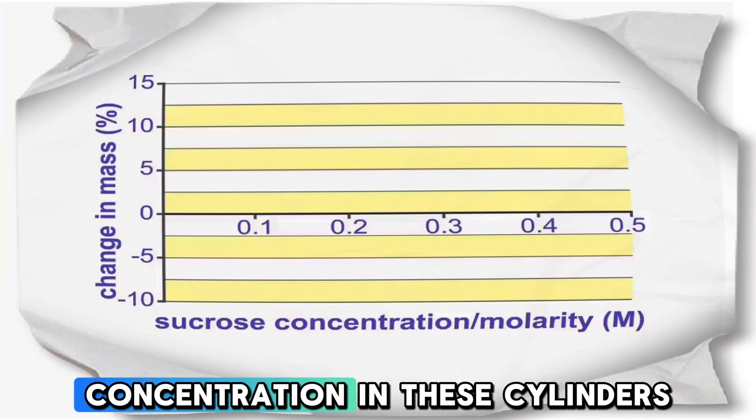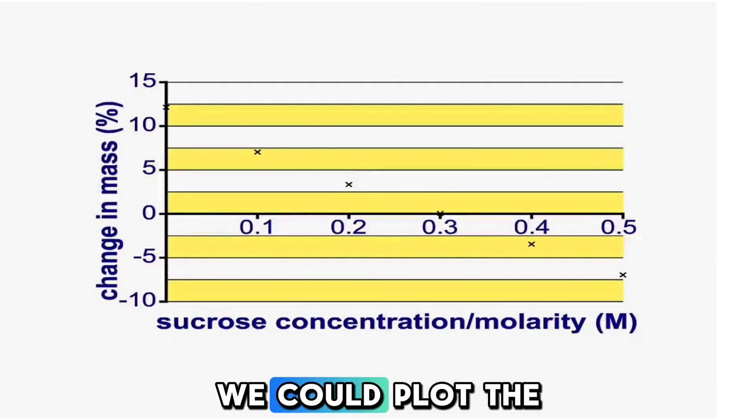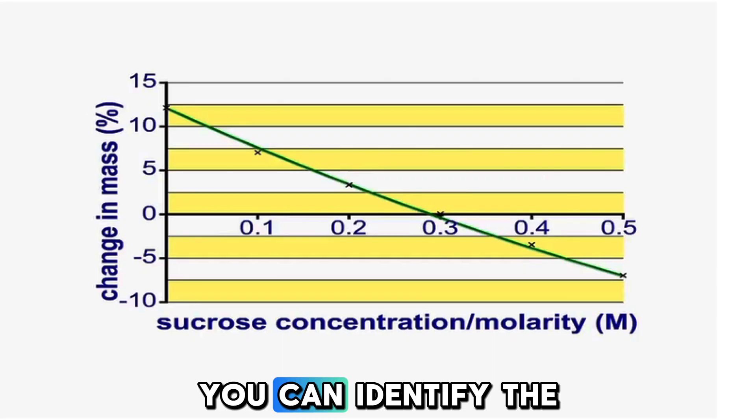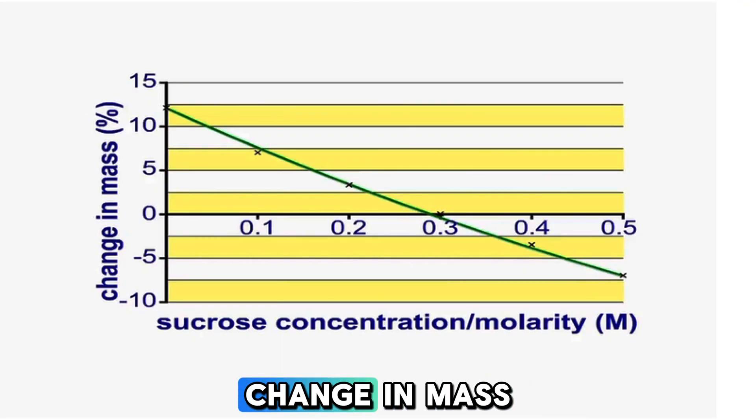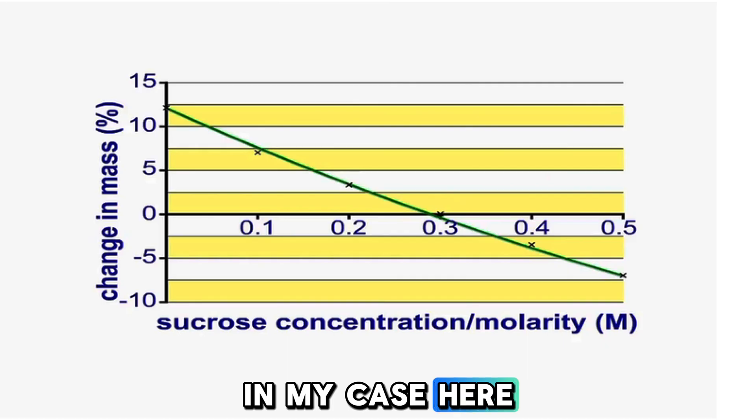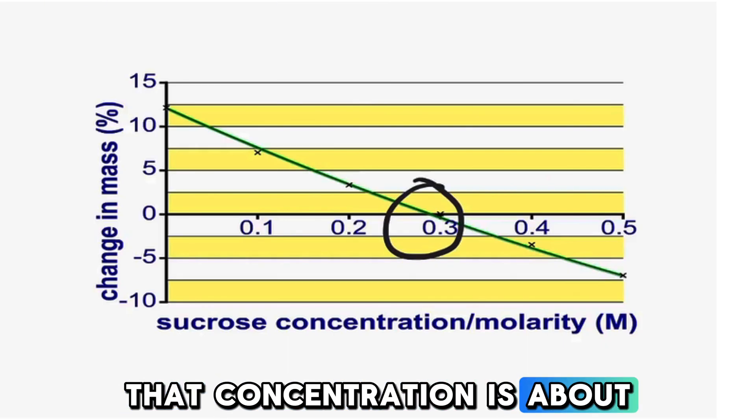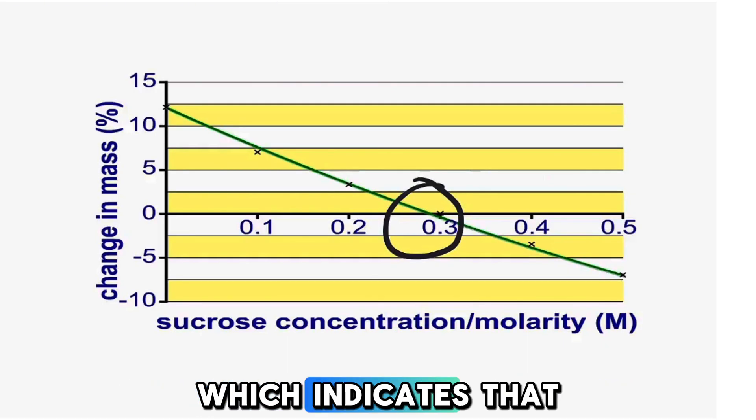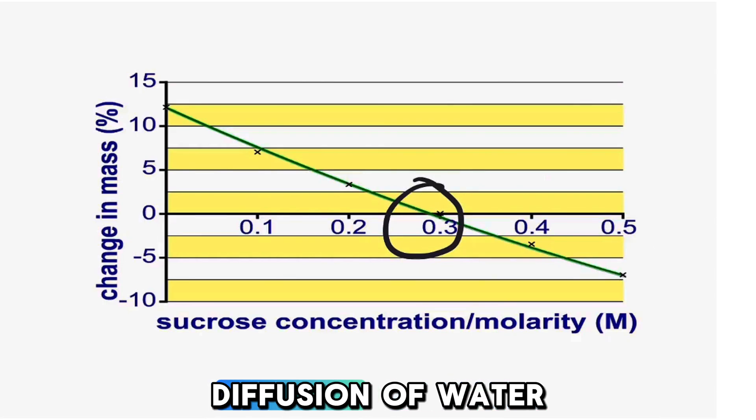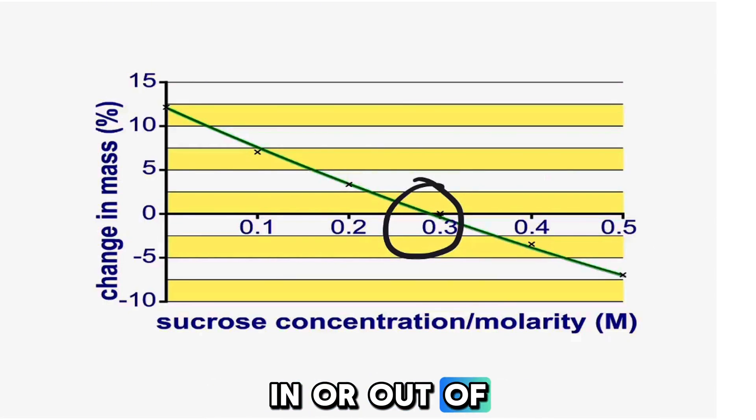To find the solute concentration in these cylinders we could plot a graph and from the graph you can identify the concentration where there is no change in mass. In my case here that concentration is about 0.3 which indicates that there is no net diffusion of water in or out of the cells.